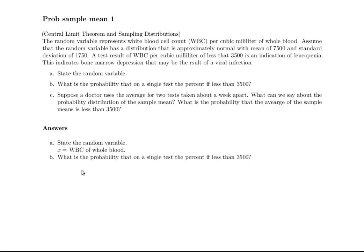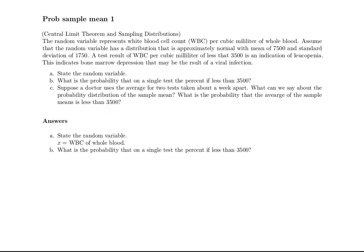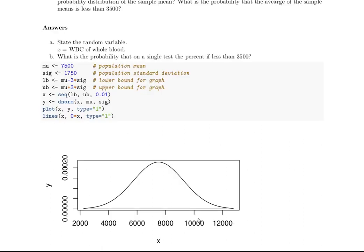Our next question is: what is the probability that on a single test the count is less than 3500? Let's draw a picture. You could draw this by hand, but I'm going to show you the R code that will draw the normal probability distribution and the area that we're looking for. Usually when working on one of these problems I simply draw the normal distribution by hand.